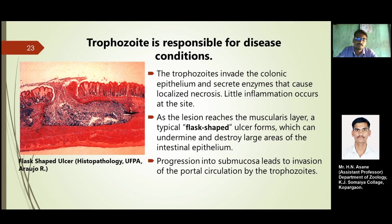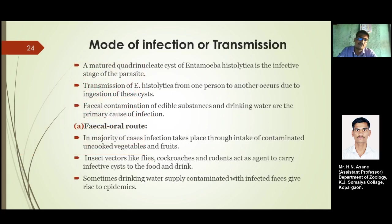Progression into the submucosa leads to invasion of the portal circulation by the trophozoites. At this stage, the quadranucleated stage converts into eight daughter cells, which then rupture and leave the lesions, get mixed with feces, and are thrown out of the body.